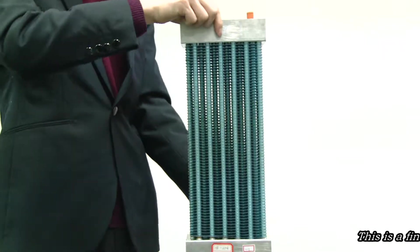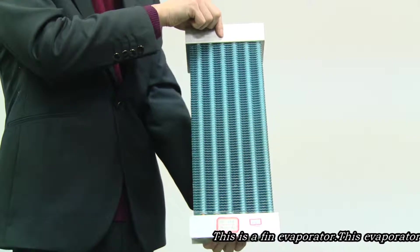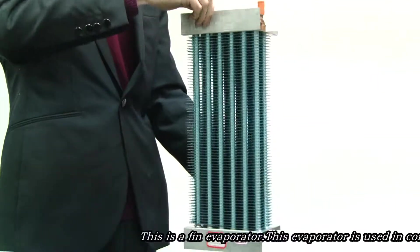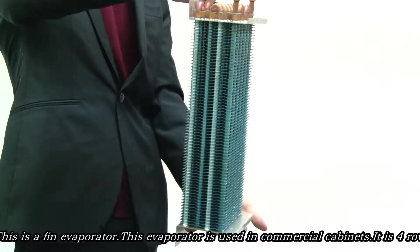This is a thin evaporator. This evaporator is used in commercial cabinets. It has four rows and six tubes in a row.